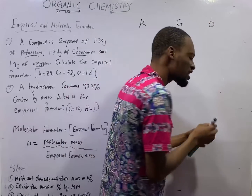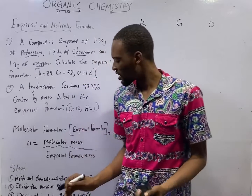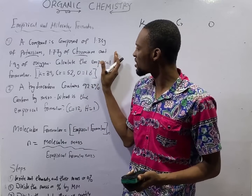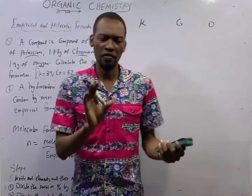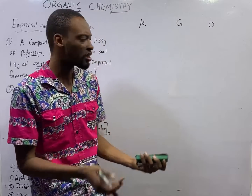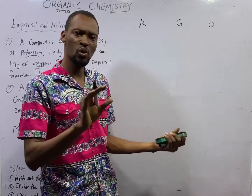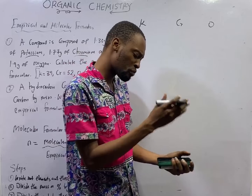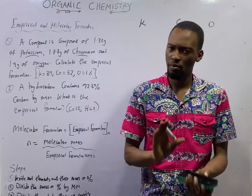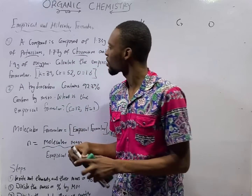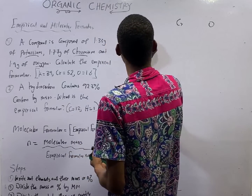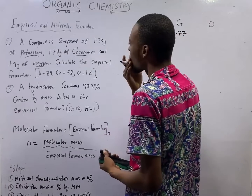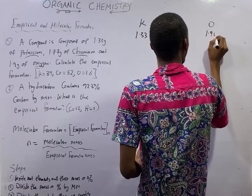The first step in calculating empirical formula is to write out the elements and their masses. In this case, you are given the masses of each element. In other cases, you may be given percentages instead — but either way, the procedure is the same. For potassium: 1.33 g. Chromium: 1.77 g. Oxygen: 1.90 g.